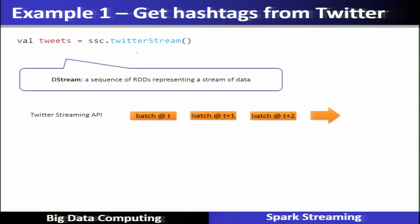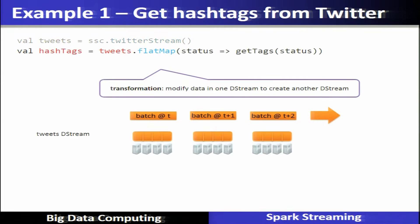This is shown in an example of getting hashtags from Twitter. A Twitter stream is input into the Spark streaming system, and after dividing into different DStreams, it will perform a transformation — the flatMap. The flatMap is defined on the tweets given into the system, and it will extract the hashtag from the status as per the transformation.